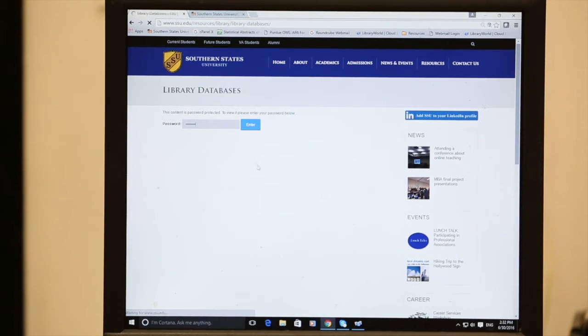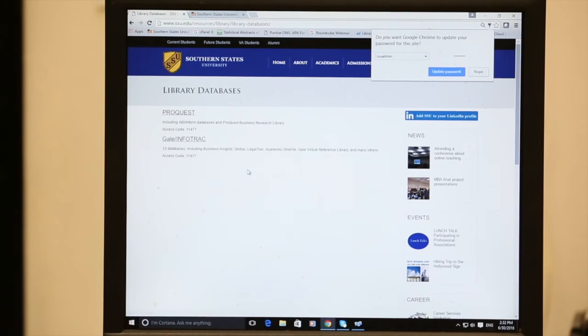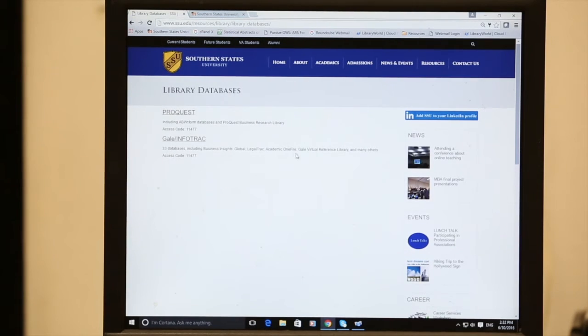Once you put that password in, you'll be taken to this page. That gives you two options, ProQuest and Gale InfoTrack. Those are both large databases that contain a lot of information. Many, many journals, magazines, newspapers, all kinds of sources.